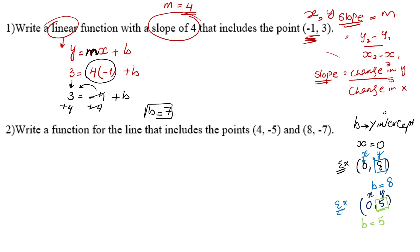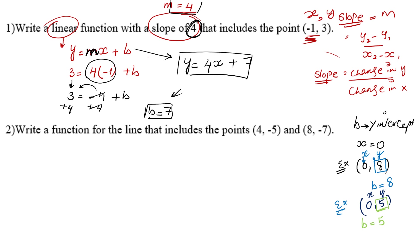Now we have b and we have the m value. Write y equals — replace m with 4, keep x as it is, and replace b with positive 7. This is how we construct a linear function when the slope is given and it passes through some point.